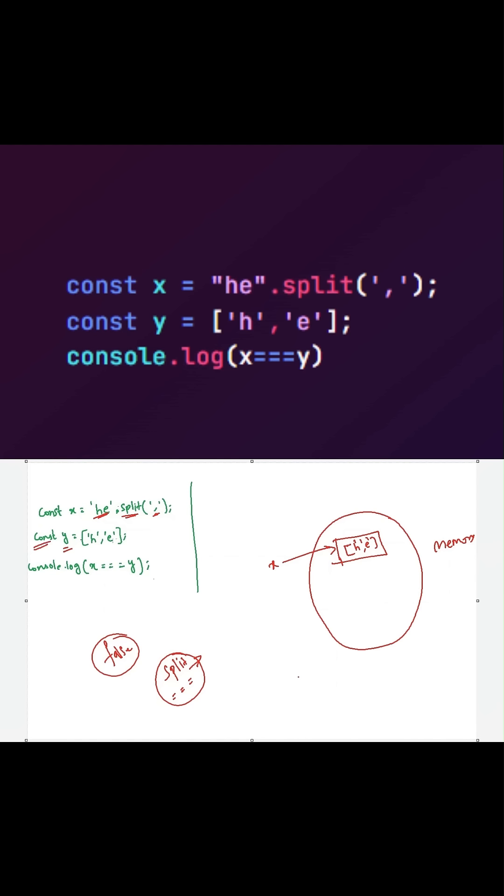Now when JavaScript sees this particular line, it will allocate some other space in the memory and it will store two characters in an array: h comma e. And y will be pointing out to this particular location in the memory.